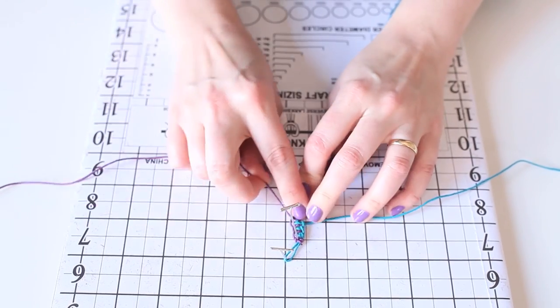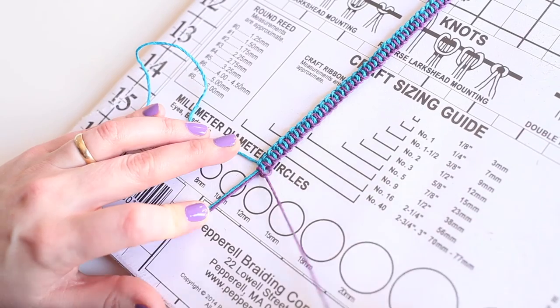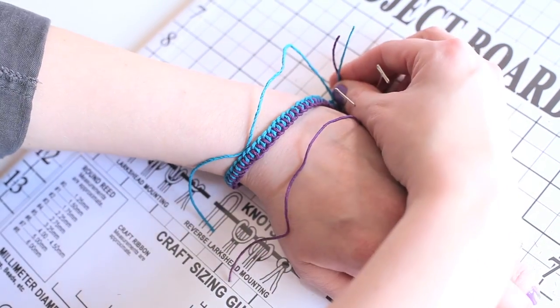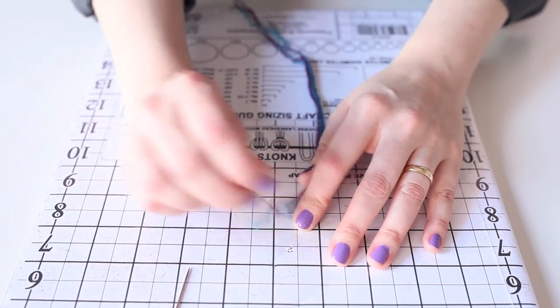All right, now I've tightened my last knot and this bracelet is long enough to fit all the way around my wrist. Now I can unpin my work from my project board.